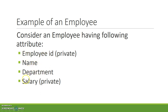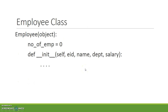We are considering employee ID and salary as private attributes so that we can secure these two values — no one can modify them except through valid getter and setter methods. The basic structure of the class is the Employee class, which is inheriting from the object class.